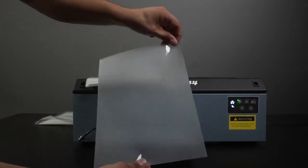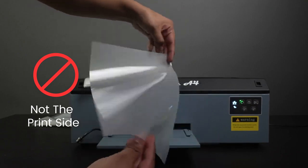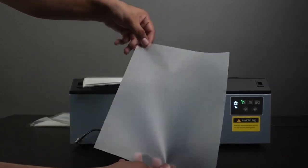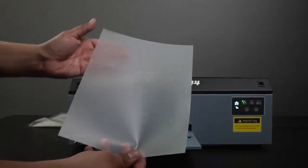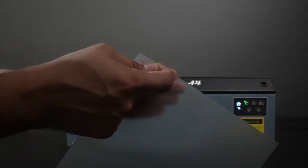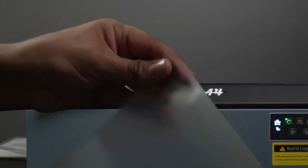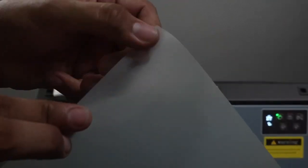If you flip the film back and forth, you will notice that there is a glossy side. This is not the print side. Another quick test is to scratch both sides. The printable side will scratch off, while the glossy non-printable side will be smooth and unscratchable.